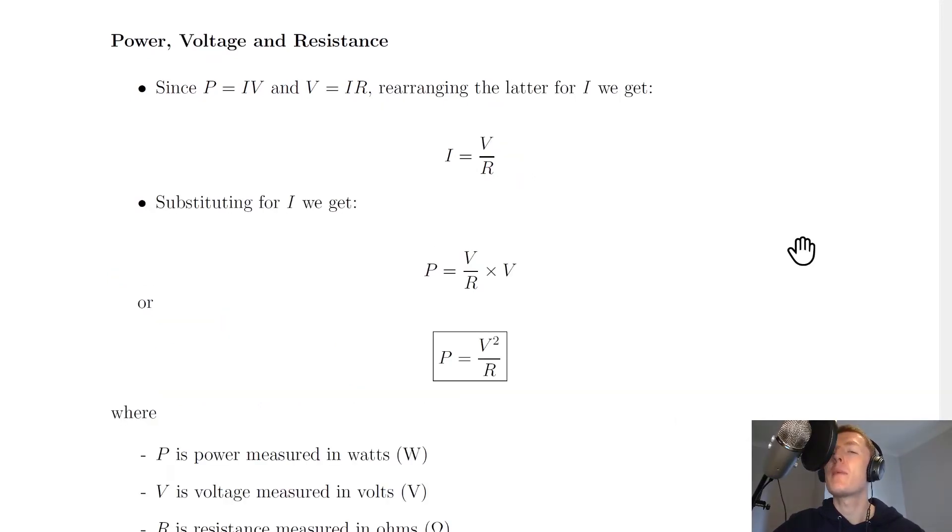Now the last relationship for power is one involving power, voltage, and resistance. We can derive another expression similar to what we just did, but this time for power, voltage, and resistance. Since P equals IV and V equals IR from Ohm's Law,